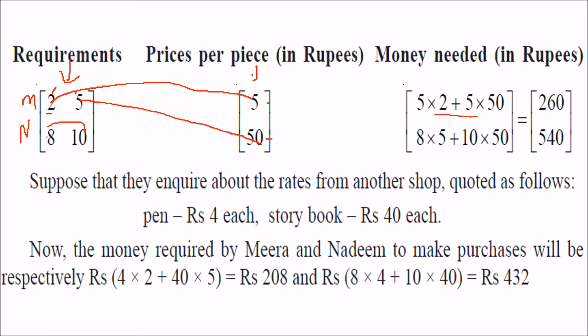This gives 260 as the first result for Meera. Then eight into five plus ten into fifty gives 540 for Nadeem.